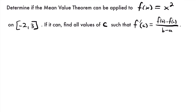Alright, welcome back. Let's start with this example. We want to determine if the mean value theorem can be applied to this function, f of x equals x squared, and we're looking at this particular interval for that function from negative 2 to 3.